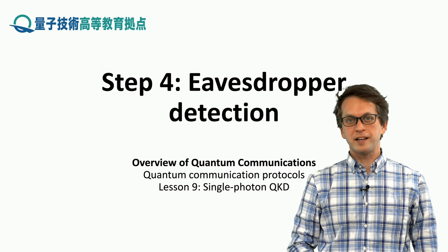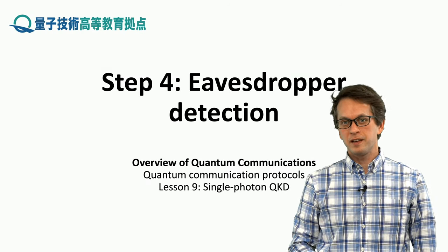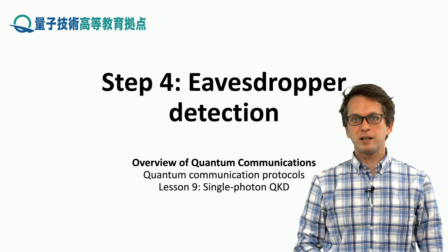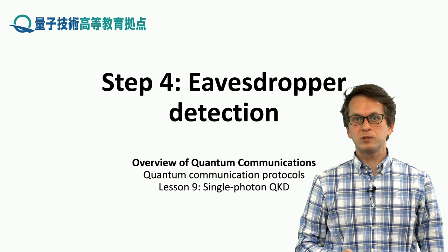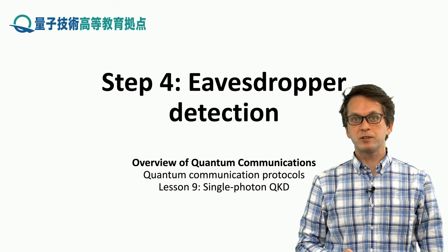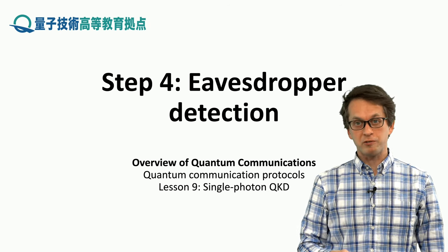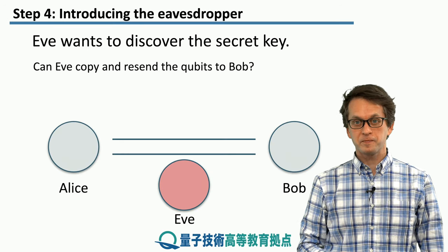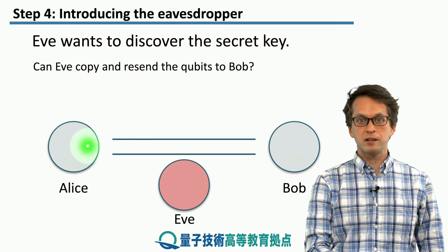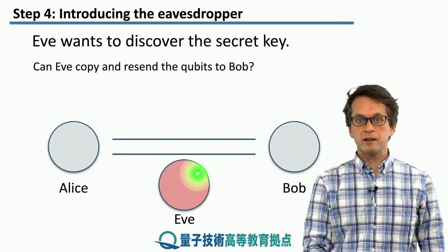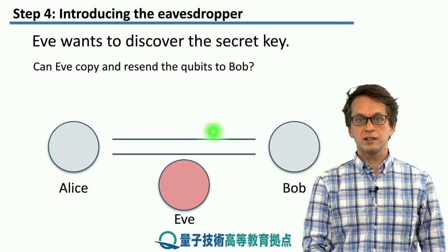Step four: eavesdropper detection. In the previous step we have seen how the ideal protocol works. Now let's see what happens when we include the effect of an eavesdropper trying to gain access to the secret key that Alice and Bob are trying to generate. We have the following scenario: Alice is communicating over a public quantum channel with Bob, and there is some third-party Eve that wants to intercept their messages.